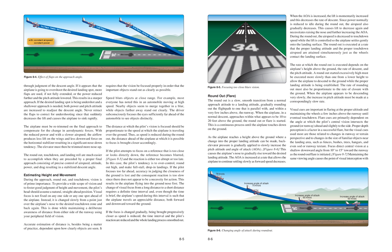When the angle of attack (AOA) is increased, the lift is momentarily increased and this decreases the rate of descent. Since power normally is reduced to idle during the round-out, the airspeed also gradually decreases. This causes lift to decrease again and necessitates raising the nose and further increasing the AOA. During the round-out, the airspeed is decreased to touchdown speed while the lift is controlled so the airplane settles gently onto the landing surface. The round-out is executed at a rate that the proper landing attitude and the proper touchdown airspeed are attained simultaneously just as the wheels contact the landing surface. The rate depends on the airplane's height above the ground, the rate of descent, and the pitch attitude.